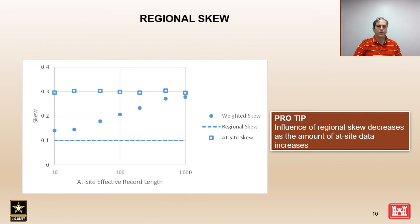Here's another useful way to think about the influence of regional skew. When there is relatively little at-site data, the regional skew will have greater influence. Towards the left-hand side of this plot, when the at-site effective record length is relatively short, the regional skew value has more influence and the weighted skew ends up closer to the regional value. As the amount of at-site data increases — moving towards the right-hand side of the figure — the regional skew estimate loses its influence and the weighted skew moves closer to the at-site skew value.